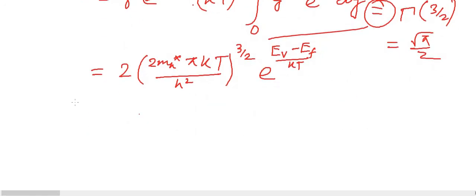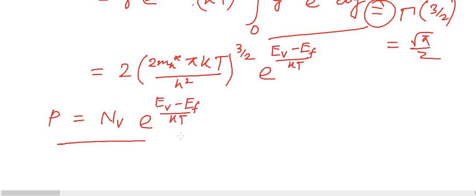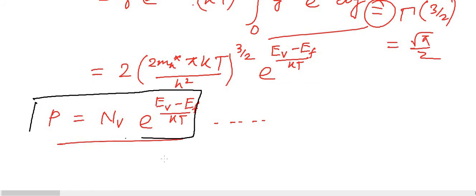So we can write P equals N_V times e^((E_V minus E_F) / kT), where N_V equals 2·(2 pi m_h* kT / h^2)^(3/2). This is equation number 2, and it denotes the number of holes present in the valence band of an intrinsic semiconductor.